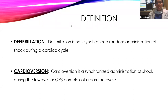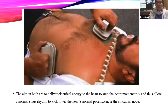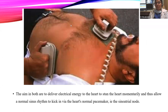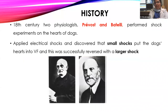The aim of delivering electrical energy to the heart is to stun the heart momentarily, thus allowing a normal sinus rhythm to kick in via the heart's normal pacemaker — the sinoatrial node. Whenever the shock is given, the heart is stunned momentarily, which allows normal rhythm to take place again through the sinoatrial node.